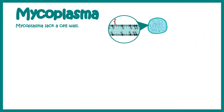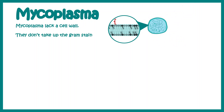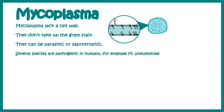Mycoplasma lacks a cell wall. That is why they don't really take up gram staining, and it's very hard for technicians to detect them. They can be parasitic or saprophytic. Many species of mycoplasma are found in sewage and soils. Not all of them are pathogenic.